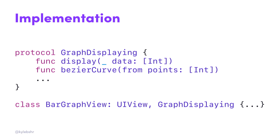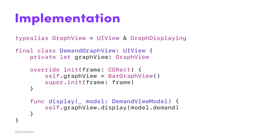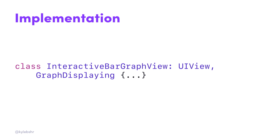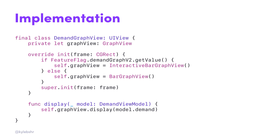Our demand graph view, which contains the other metadata like the labels and the chart itself, looked something like this. It had a private property called graphView — just a type alias of UIView and GraphDisplaying — so we don't care what kind of graph view is being used, as long as it conforms to the protocol. When we display our view model, we can call display on that through the protocol. When we wanted to do our redesign, we created a new interactive bar graph view that also conformed to the protocol. Based on our feature flag, we either set it to the interactive bar graph view or the bar graph view, and our demand graph view was none the wiser — you could set the data the exact same way.